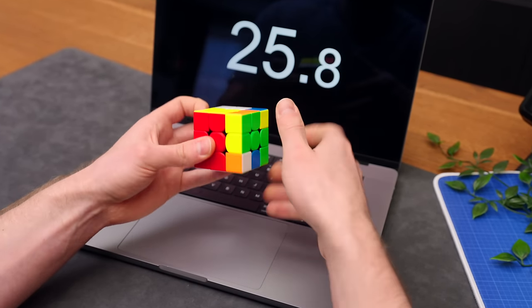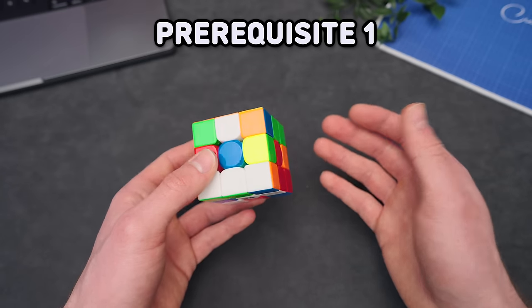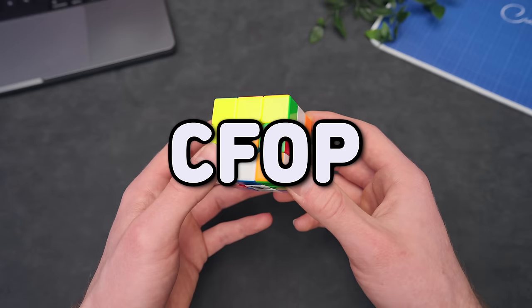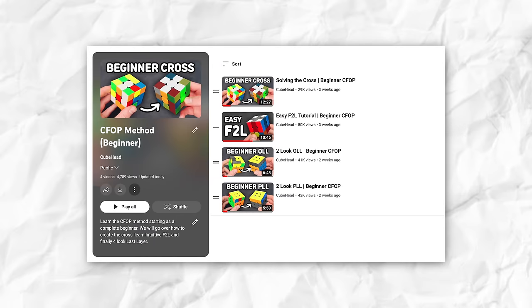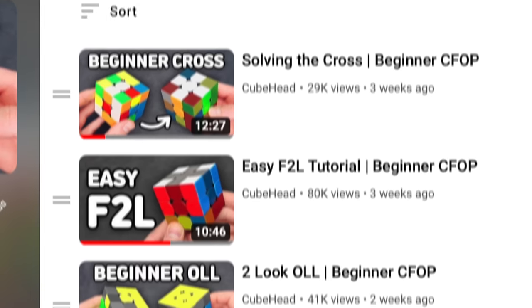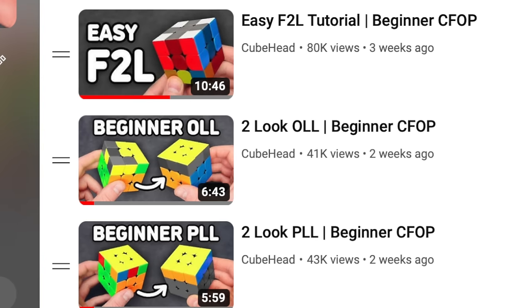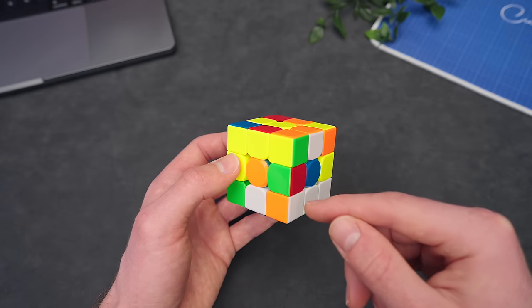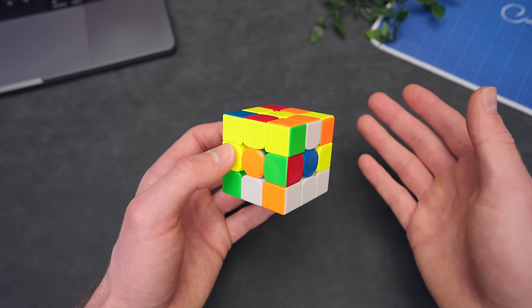Although there are a few prerequisites before we get to the 10 tips. First of all, you need to know the basics of the CFOP method. I have an entire playlist that goes over how to solve the cross, the first two layers, and then OLL and PLL. But the tips in this video apply to whatever level you are using the CFOP method.